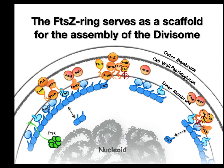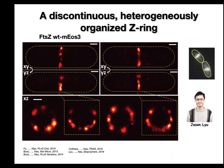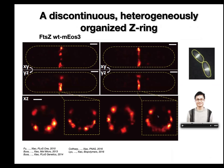Now if we look at the structure of this FTSZ ring using super-resolution imaging, you notice immediately that the Z-ring is really not a ring — it's a broken ring. It's discontinuous and heterogeneous. This is the super-resolution image compared with the ensemble fluorescence image — you can clearly see the difference. This work was done by postdoc Jason, and this structure gave us some idea about Z-ring function.